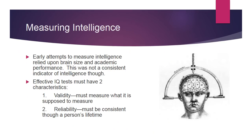Let's look at how we measure intelligence. Early attempts relied on the size of our brain and academic performance — they used to weigh the brain and measure its diameter. But this was not a consistent indicator of intelligence. Eventually, people realized that for an IQ test to be effective, it has to have two characteristics: it has to be valid, meaning it must measure what it is supposed to measure, and it must be reliable — consistent through a person's lifetime.